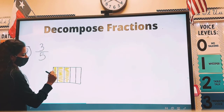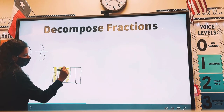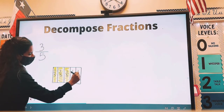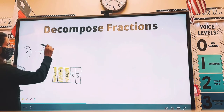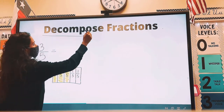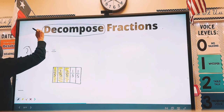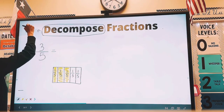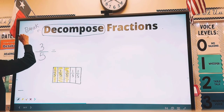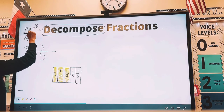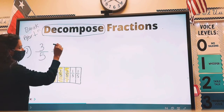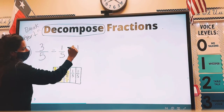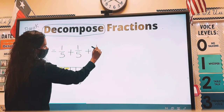Now we're going to go ahead and fill in the unit fractions. So go ahead and write one-fifth in each of the rectangle pieces. The fraction is three-fifths, so we're going to decompose it — which means breaking down. So three-fifths would equal one-fifth plus one-fifth plus one-fifth.